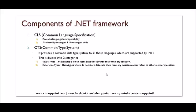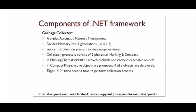Value types are data types that store data directly into their memory location. For example, integer: `int a = 0` — this is a value type. Reference types are data types that don't store data directly in their memory location; they refer to another memory location. For example, `string myName = "something"` — the value is not stored directly in myName but somewhere else. For value types, memory allocation is done in the stack, whereas for reference types, memory allocation is done in the heap.